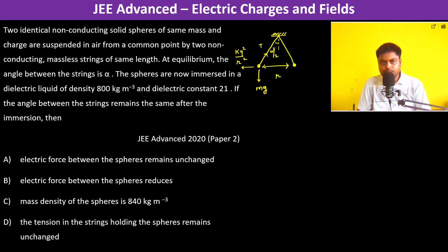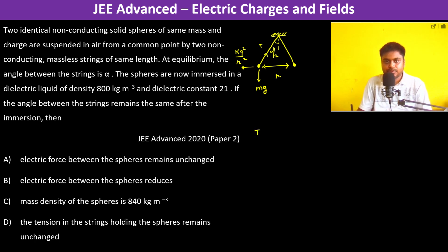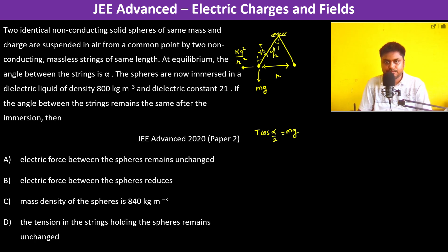The spheres are now immersed in a dielectric liquid of density 800 kg per meter cube with dielectric constant 21. If the angle between the strings remains the same after the immersion, then we can write t cos(α/2) = mg and t sin(α/2) = kq²/r².